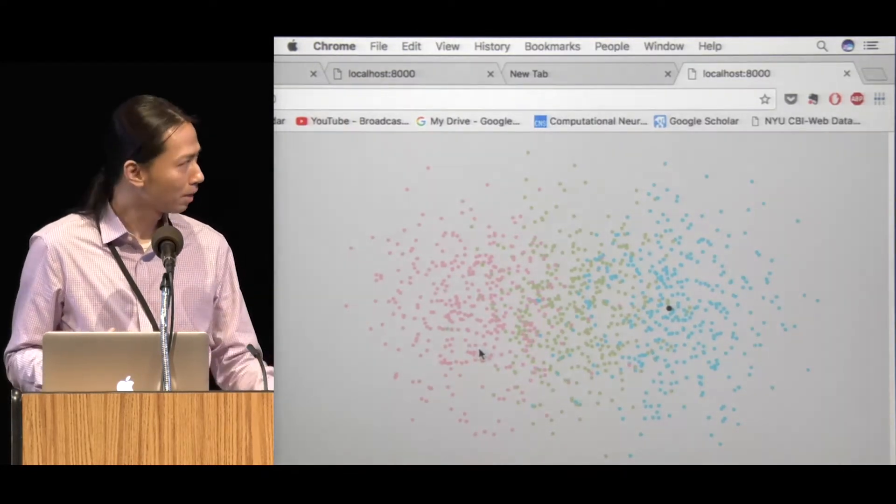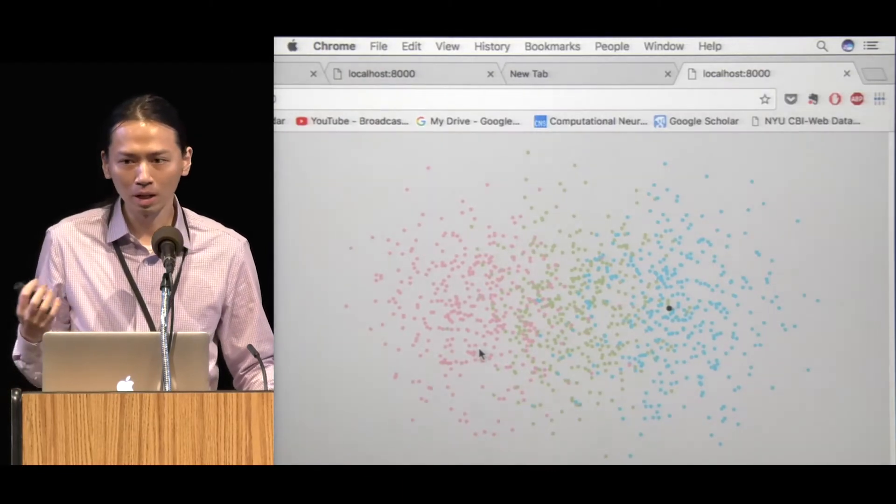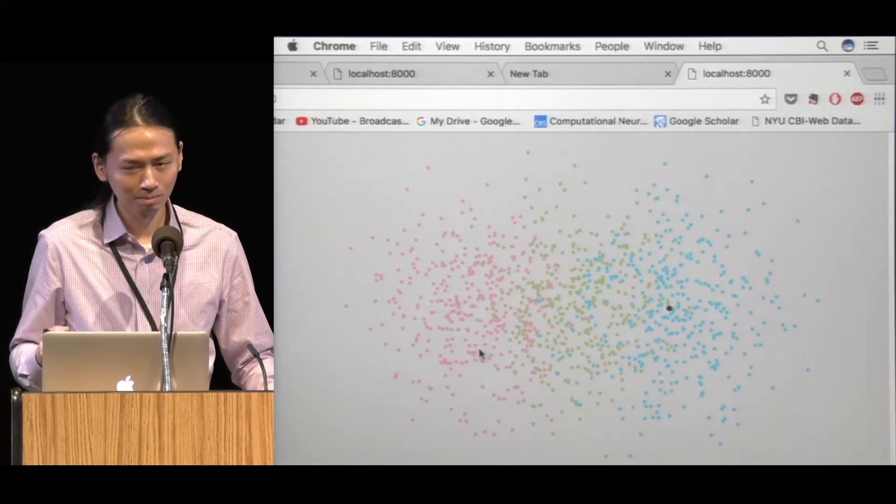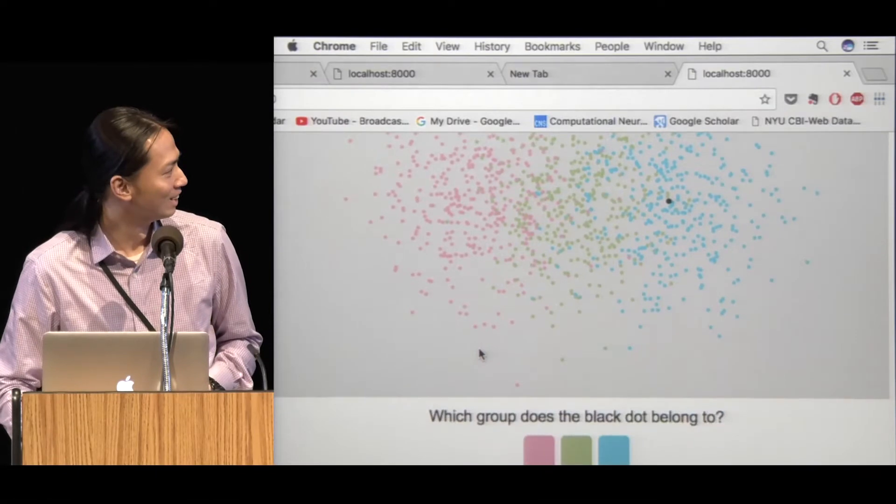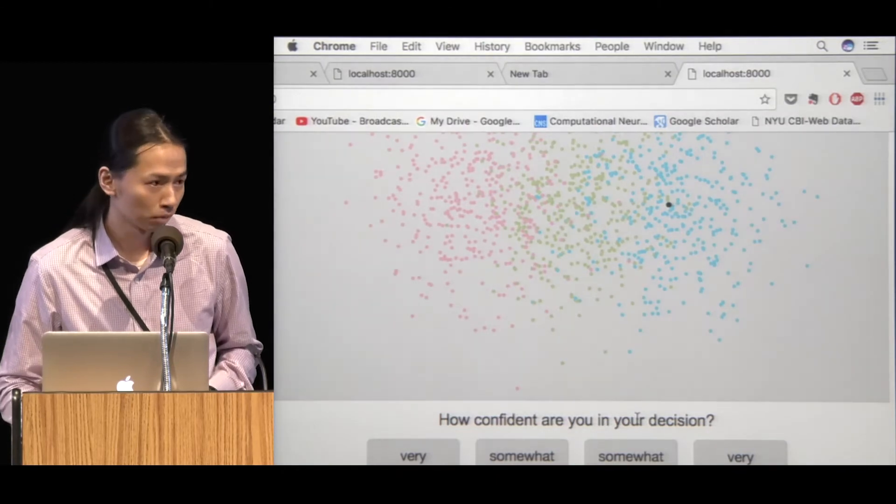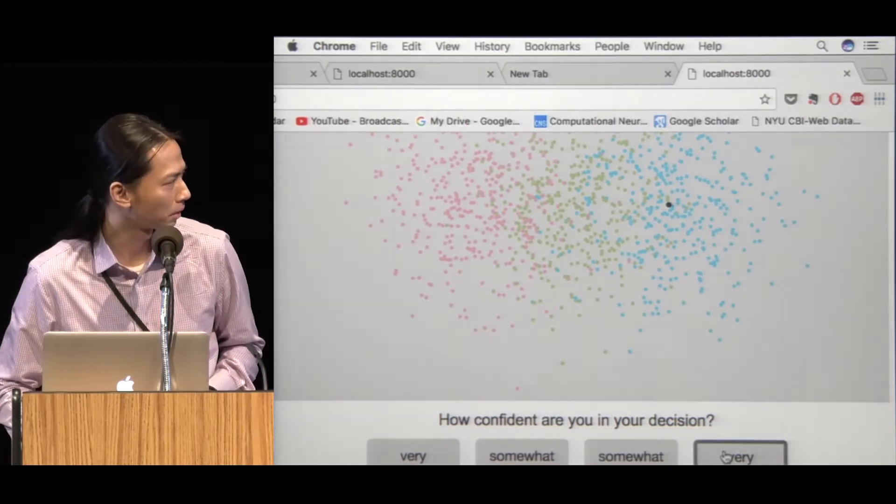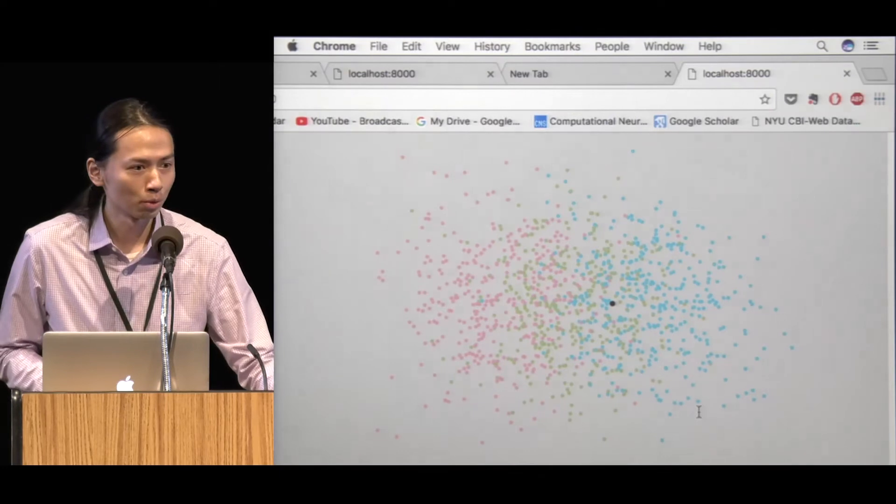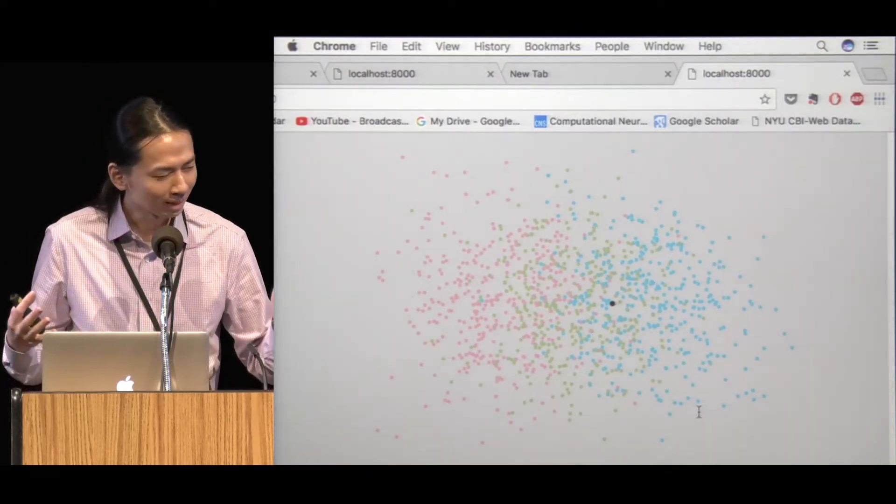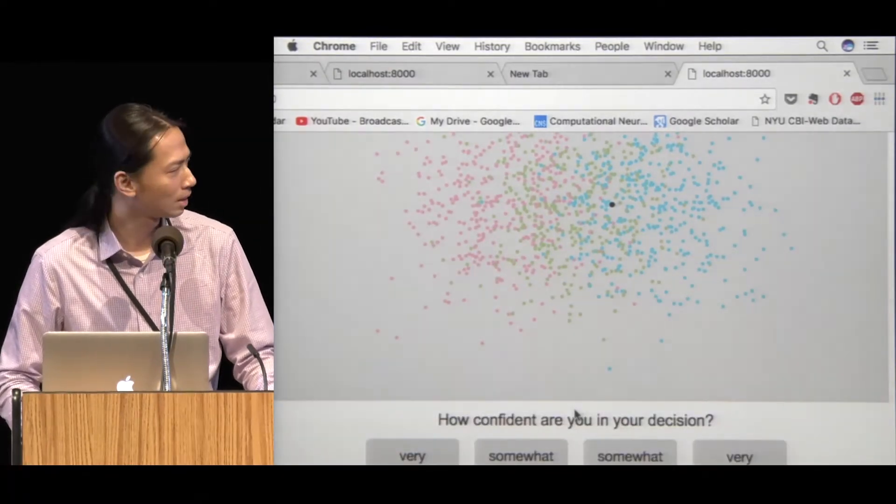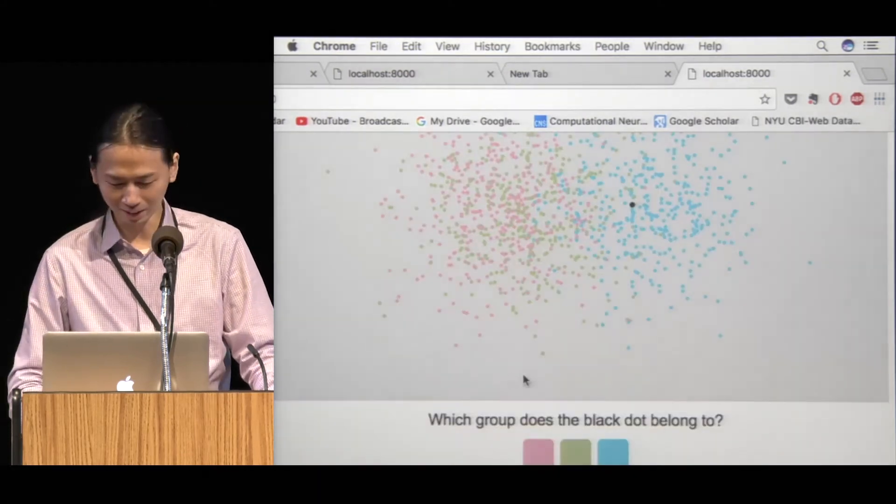We can do one practice trial here. When I count to three, please shout out the color of the group that you want to choose. One, two, three. Blue. Wonderful. Let's choose blue. After that, observers report their confidence level by four button presses. I think we are very confident here. Let's do one more trial. Shout out the color. One, two, three. Green. Maybe some people say green, and I feel that you're not confident. Maybe I'll choose this.